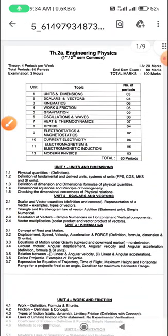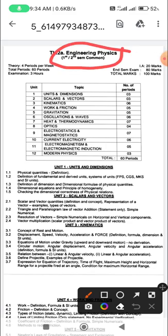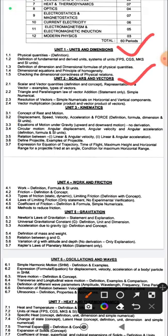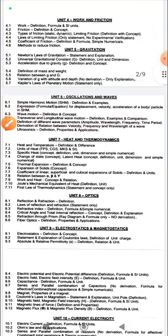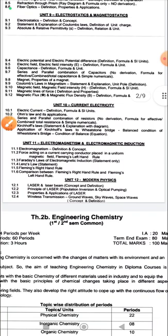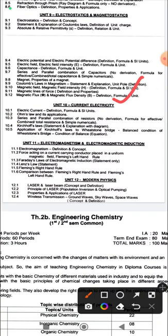Starting with engineering physics, the topics include units and dimensions, scalar and vector, kinematics, work and friction, Newton's law, gravitation, waves, heat and thermodynamics, optics, electrostatics, current electricity, electromagnetic induction, and modern physics. These are topics that diploma and first-year students have studied.